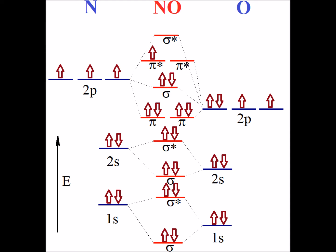NO has 10 bonding electrons, 5 antibonding electrons, for a bond order of 2 and a half.